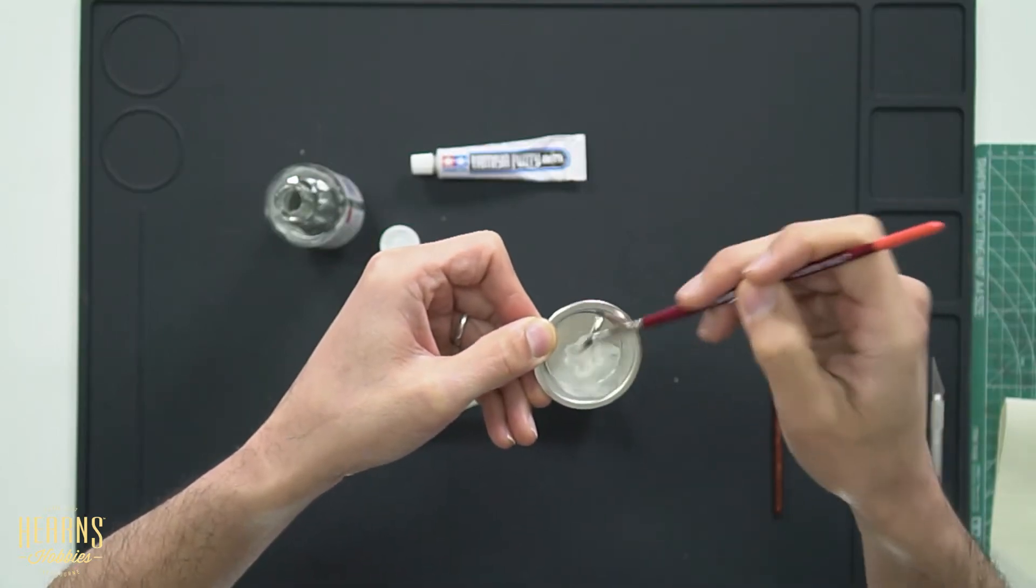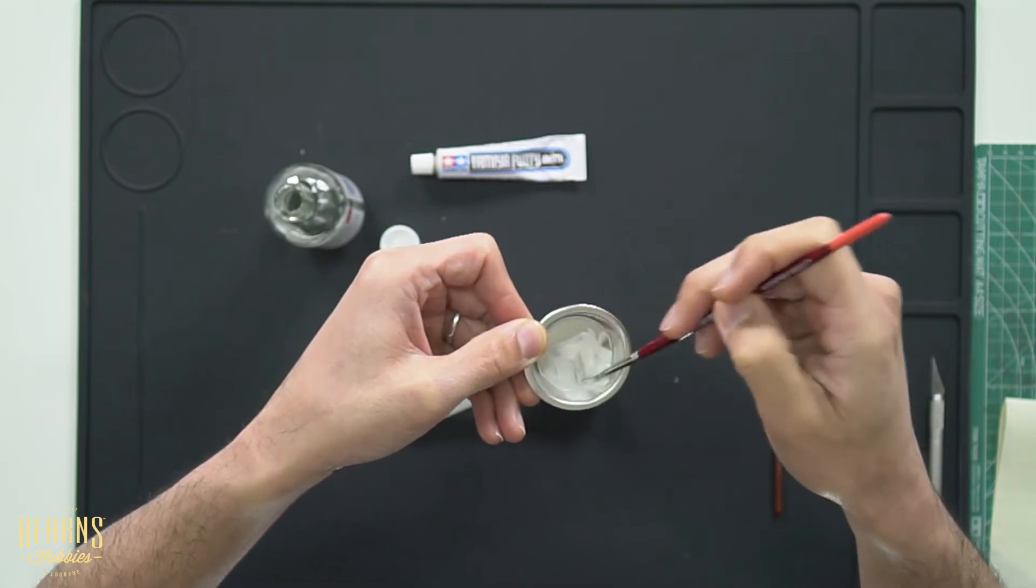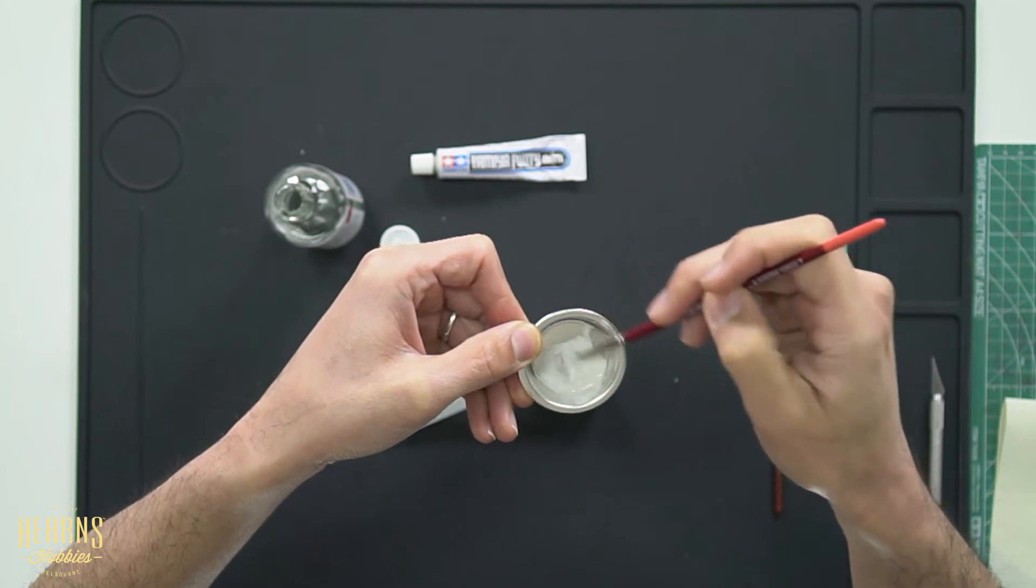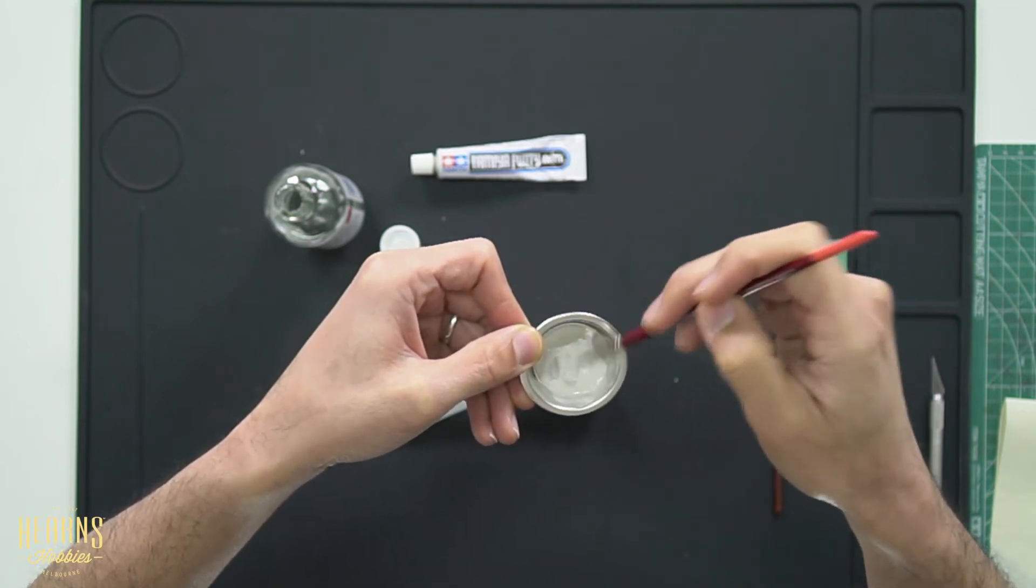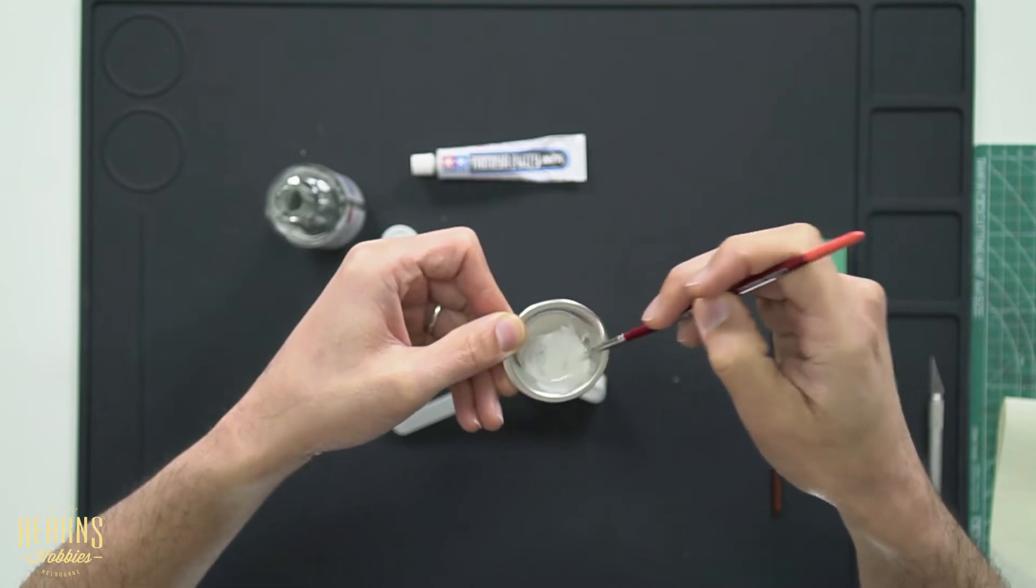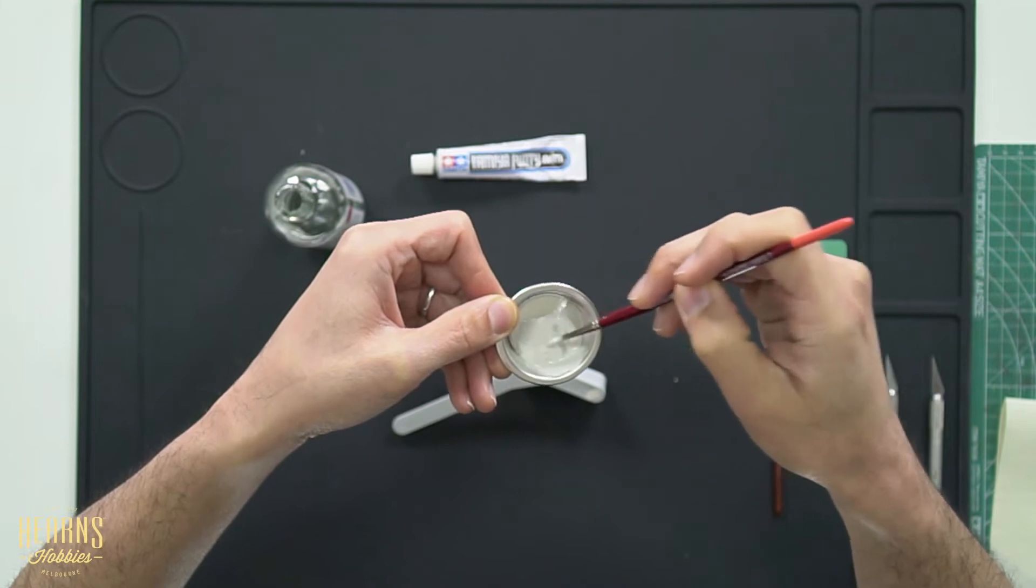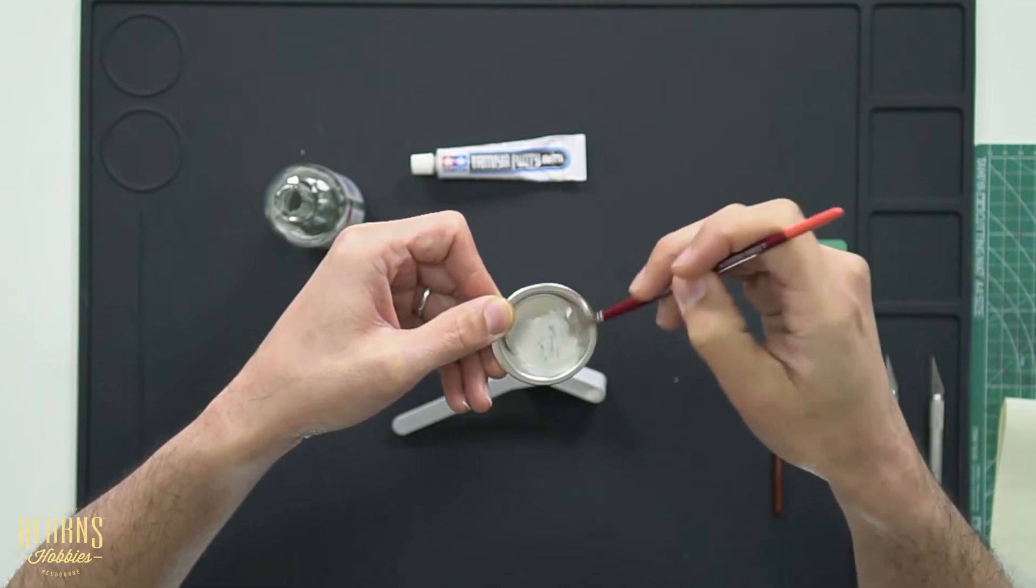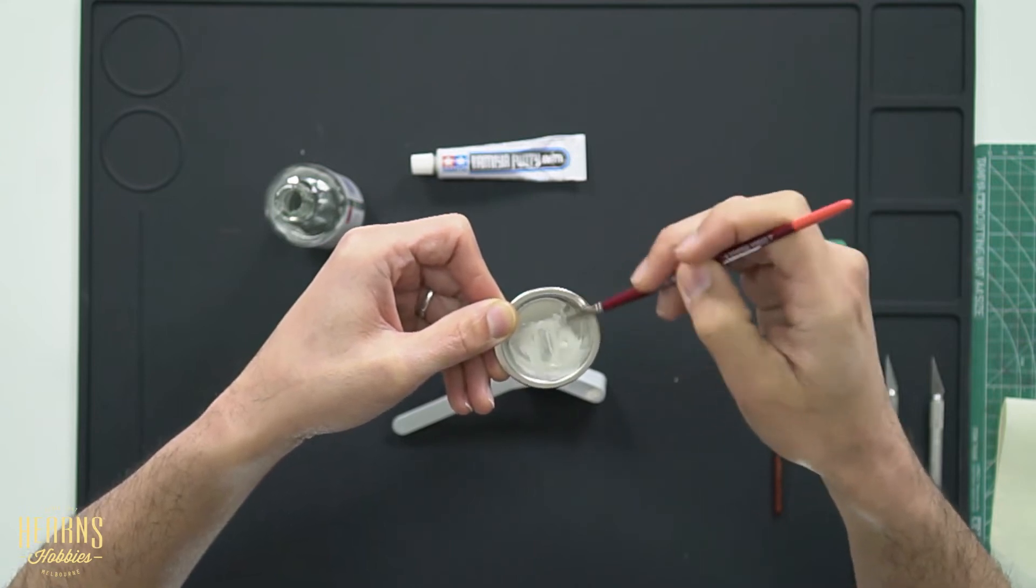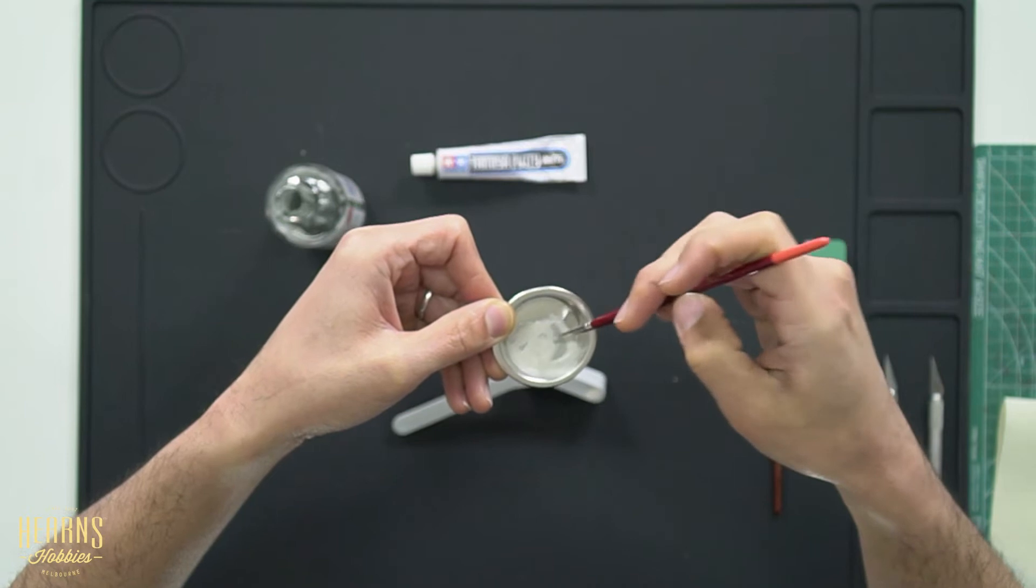And we'll just mix it up. You can see it start blending into the thinner now. Now as you mix it you'll be able to see the consistency you get. Gets to a point where it's brushable. It's still pretty chunky so it will need quite a bit of work before it's fully mixed through. There's a huge chunky bit there.